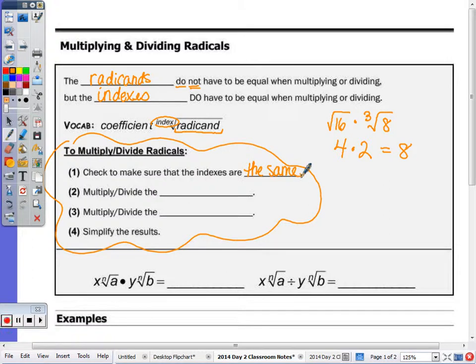Step number two, you want to multiply or divide the coefficients. That's the number out front of your radical symbol. And then you're going to multiply or divide the radicands, and simplify when possible.